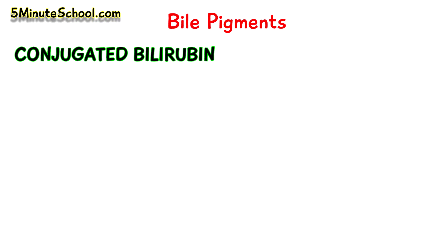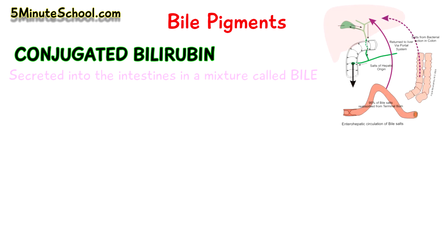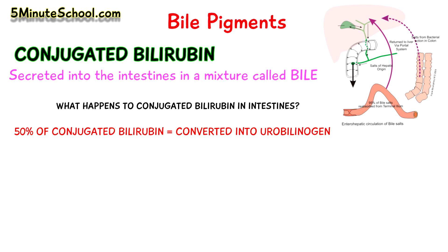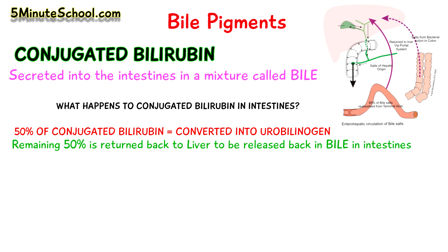The conjugated bilirubin is then secreted into the intestines with a mixture called bile. In the intestines, around half of it is converted into urobilinogen by the intestinal bacteria. The remaining half of the conjugated bilirubin is returned back to the liver via the enterohepatic circulation, so that it can be re-excreted into bile.